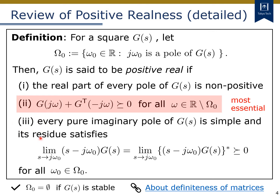The third condition seems complicated, but it is necessary to define the positive realness of G which has some pure imaginary poles. For example, this condition is necessary to define the positive realness of the integrator, which has the pole at the origin. This represents the fact that the residue matrix for the pure imaginary pole should be a positive semi-definite matrix. To see the definiteness of matrices, please look at this link.